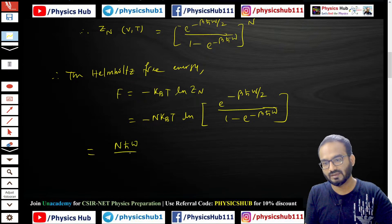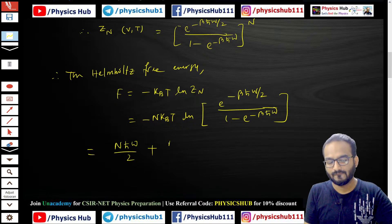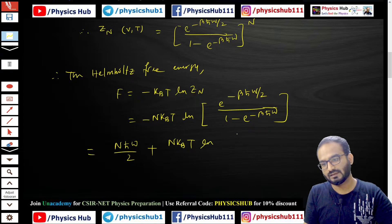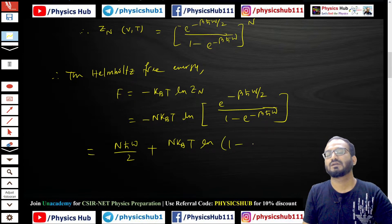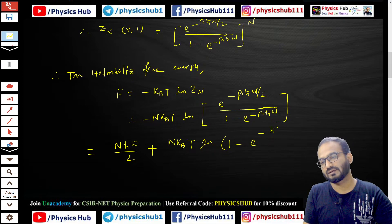Another term comes: plus Nk_B T ln[1 minus e to the power minus βℏω], which equals plus Nk_B T ln[1 minus e to the power minus ℏω/(k_B T)].